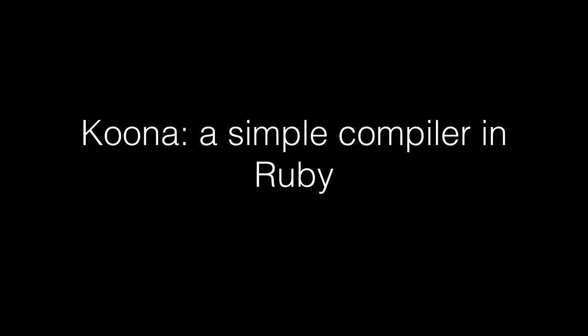I recently wrote a very simple compiler in Ruby called Kuna. The compiler converts Kuna grammar into C. It's rather limited at the moment, but it's a simple working compiler with easy to understand Ruby code. You can go to the GitHub page for more information.